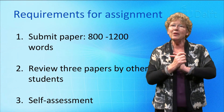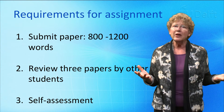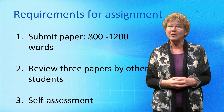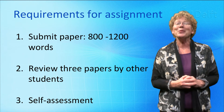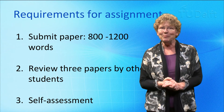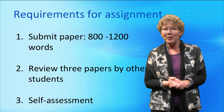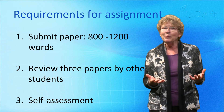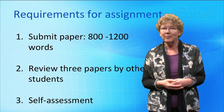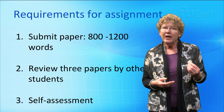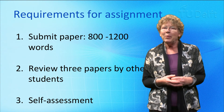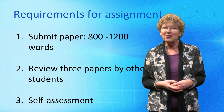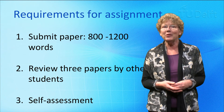You will deliver your assignment in the form of a concise paper with around 800 to 1200 words. This is the first part of the assignment. The second part is concerned with peer review. After you have submitted your paper for review, you will be given three of your peers' papers to review, and your own paper will likewise be reviewed by three of your peers. The final step is your self-assessment. Please check section 7.4 of the course for more detailed instructions on the assignment, on the peer review and your self-assessment.